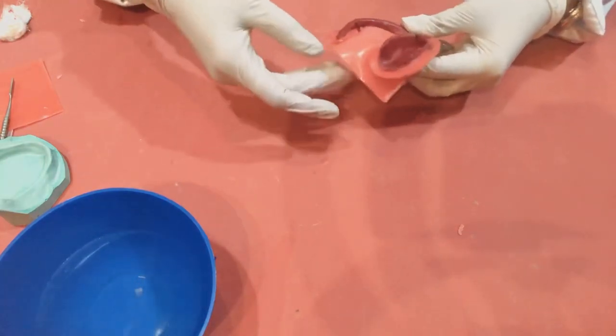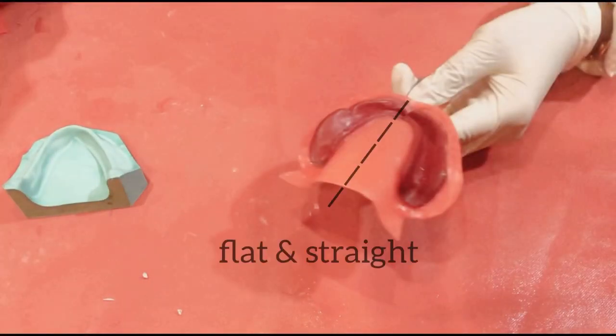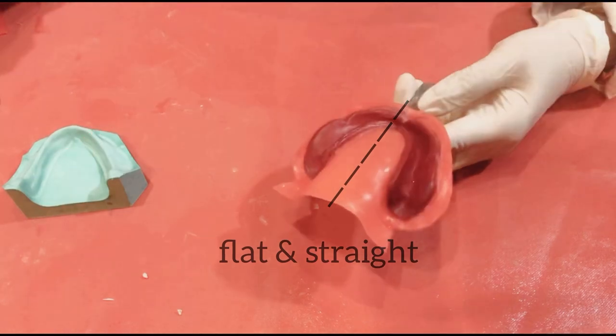Some important points to keep in mind are: see the tongue space wax should extend flat and straight, only then you will get a flat straight tongue space on your cast.